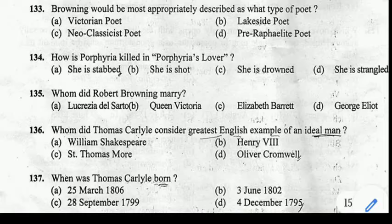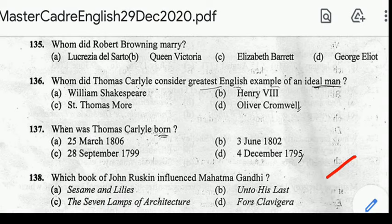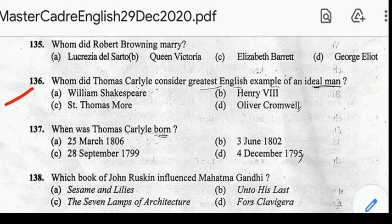Number 135: whom did Robert Browning marry? Correct answer: option C, Elizabeth Barrett. Number 136: whom did Thomas Carlyle consider the greatest English example of an idol man? Correct answer: option D, Oliver Cromwell.